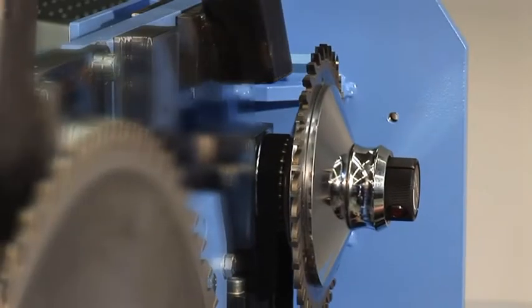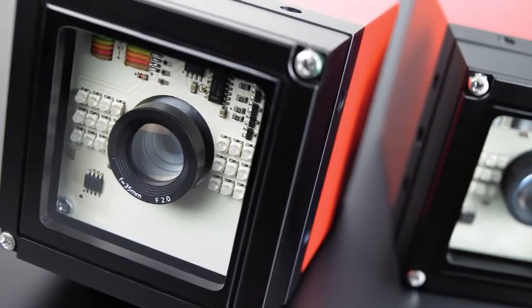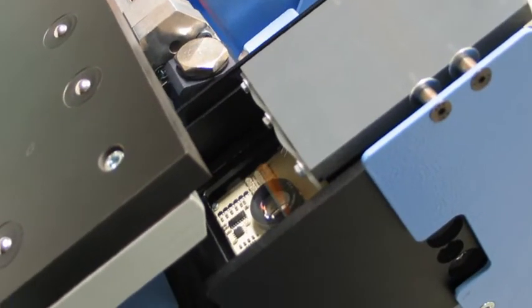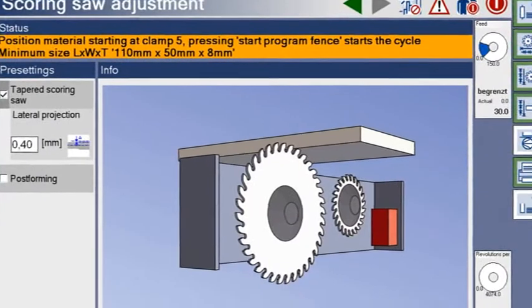Adjusting the saw blades is now as easy as ABC. This is done via the new fully automatic camera controlled system. It's easy to operate, reduces errors and saves time. The program starts at the push of a button.